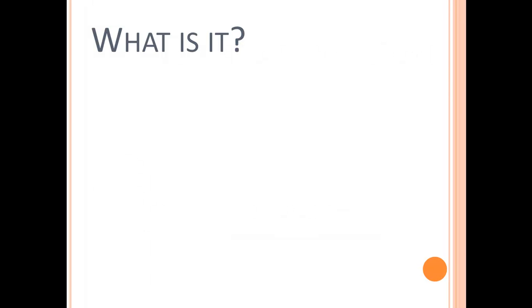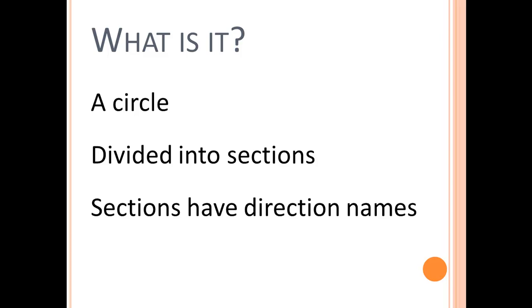What is a compass rose? A compass rose is a circle divided into equal sections. The sections have direction names. In the simplest form, we have a circle.